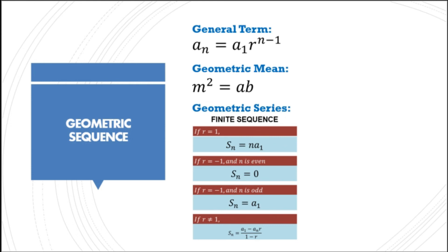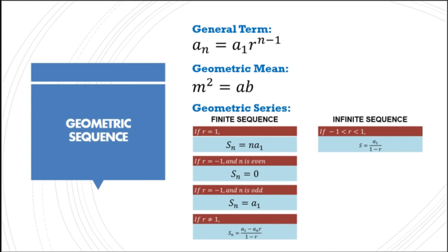For the infinite sequence, we can only get the sum if the value of r is between negative 1 and 1. The formula is: S equals a sub 1 all over (1 minus r).